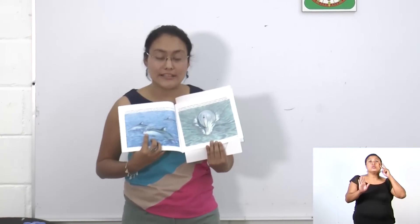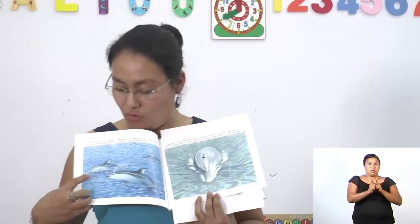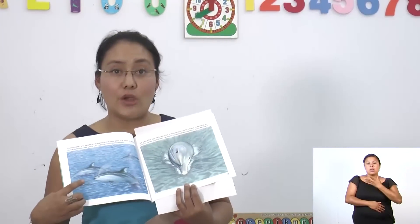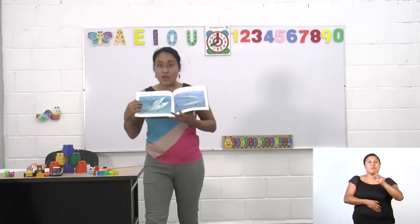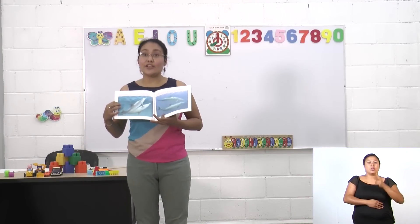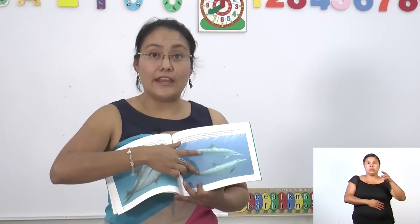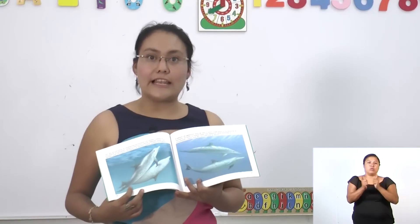En este libro que tengo acá, vamos a ver colecciones. Tenemos una colección de tres elementos: uno, dos, tres. Y al lado tenemos una colección de un elemento. Posteriormente, en este cuento también podemos observar dos colecciones de dos: dos delfines y dos delfines. Tenemos dos colecciones de dos elementos.